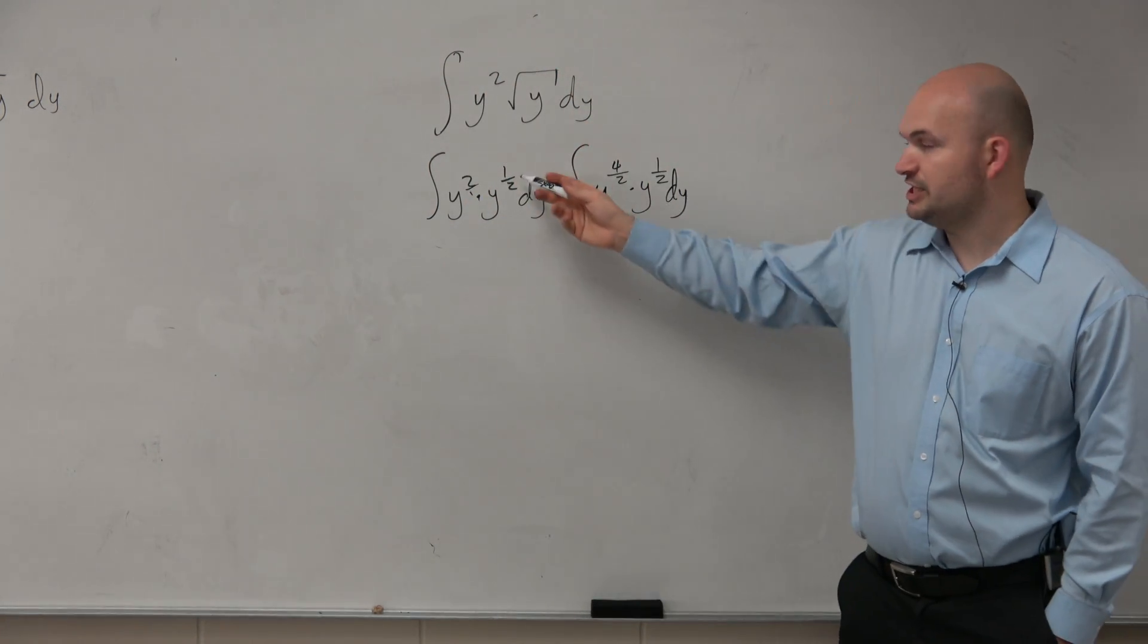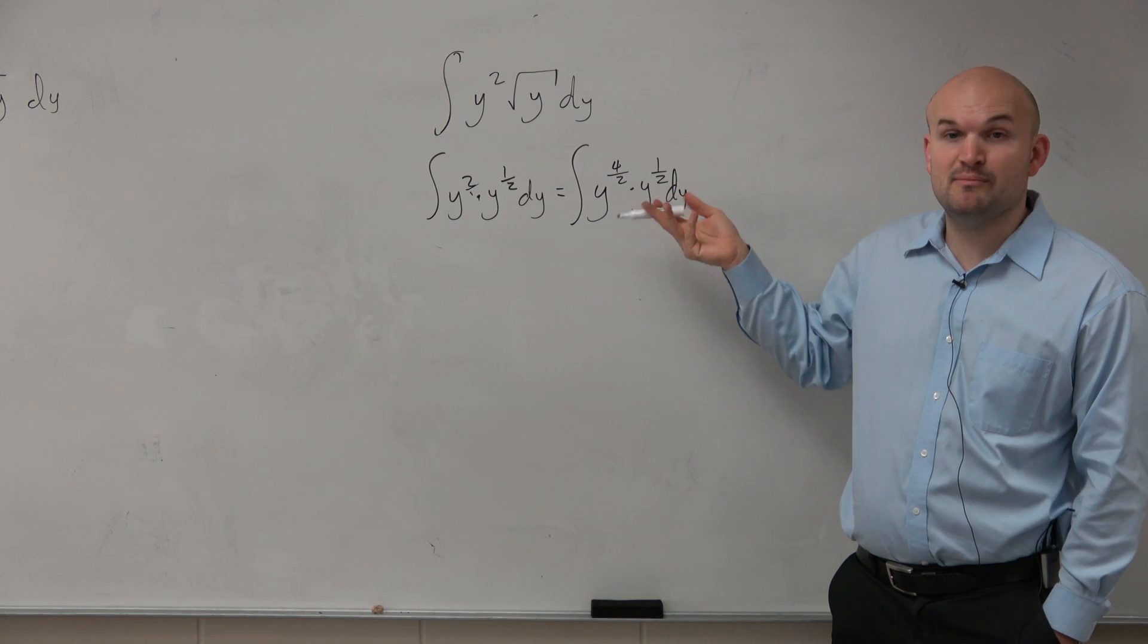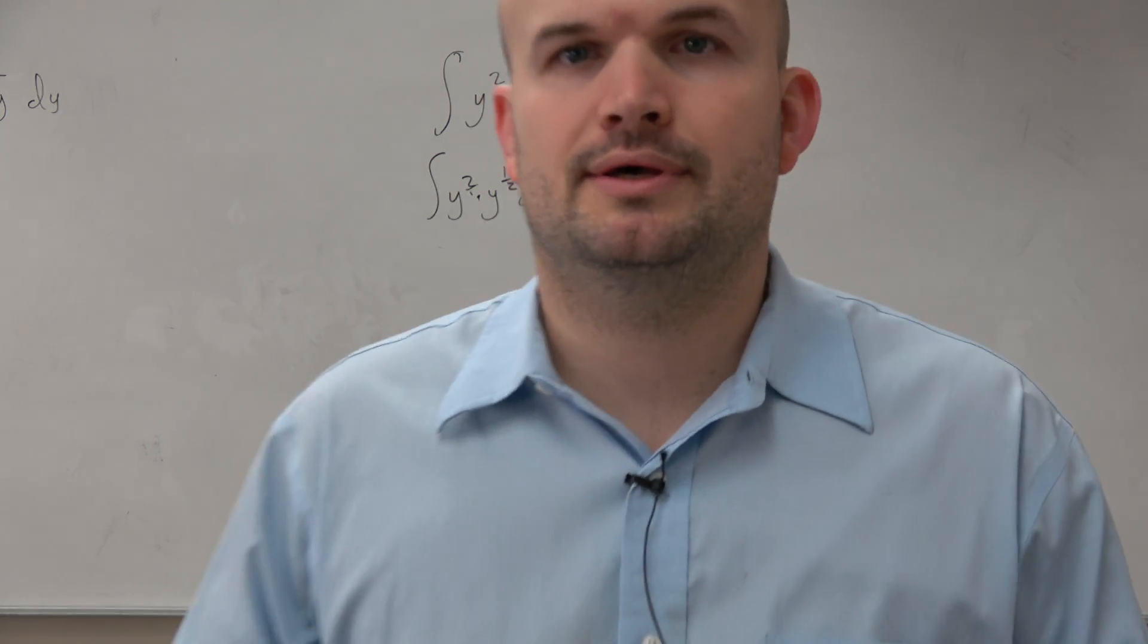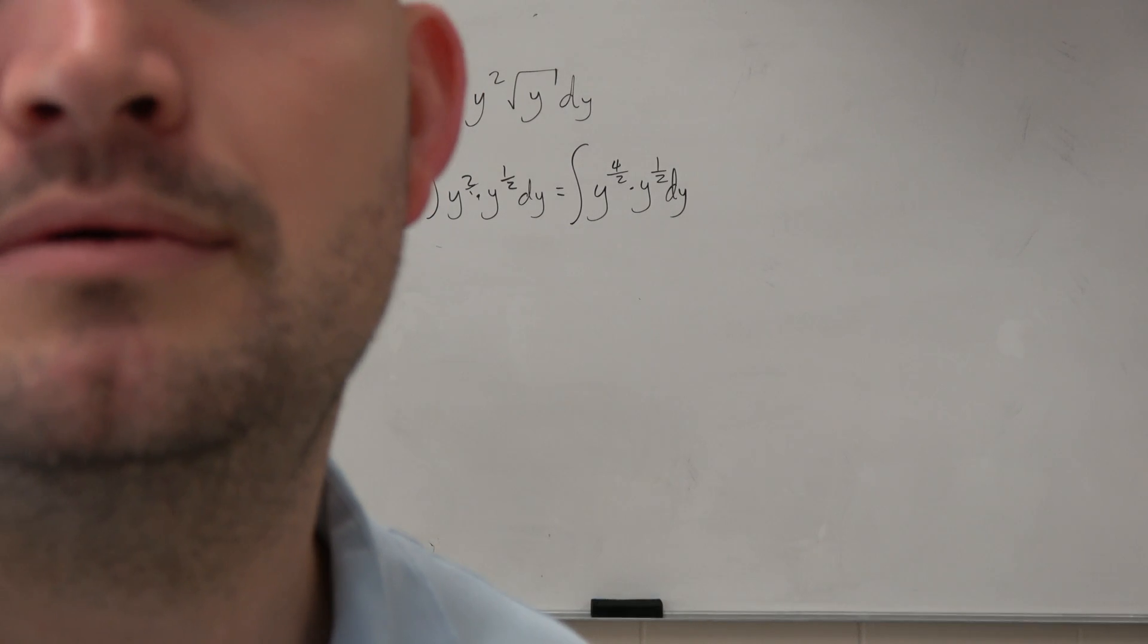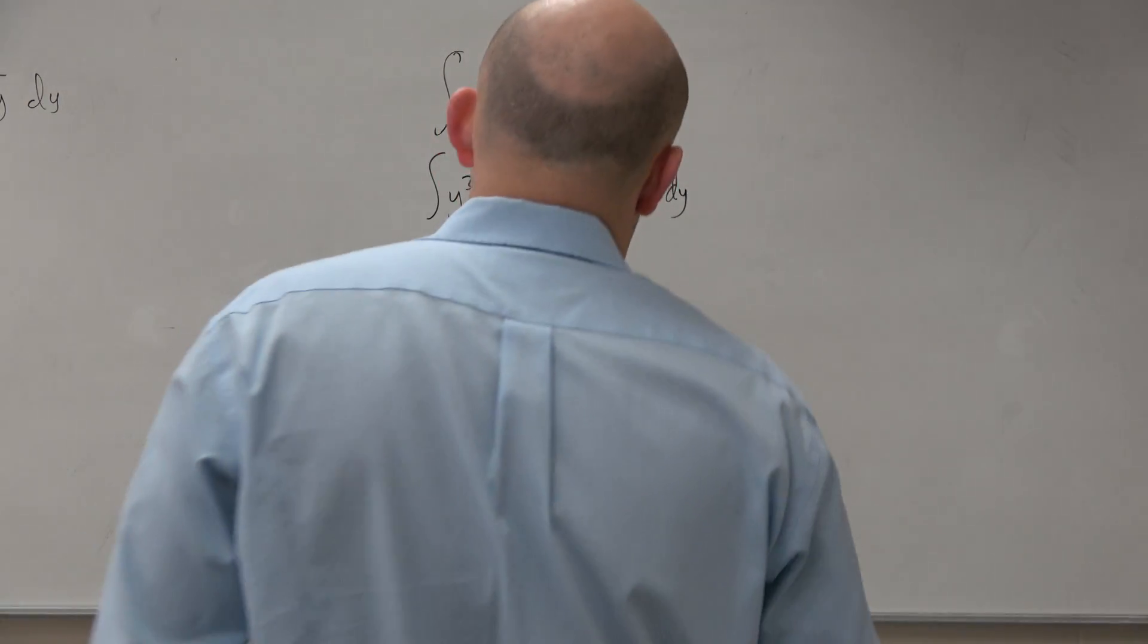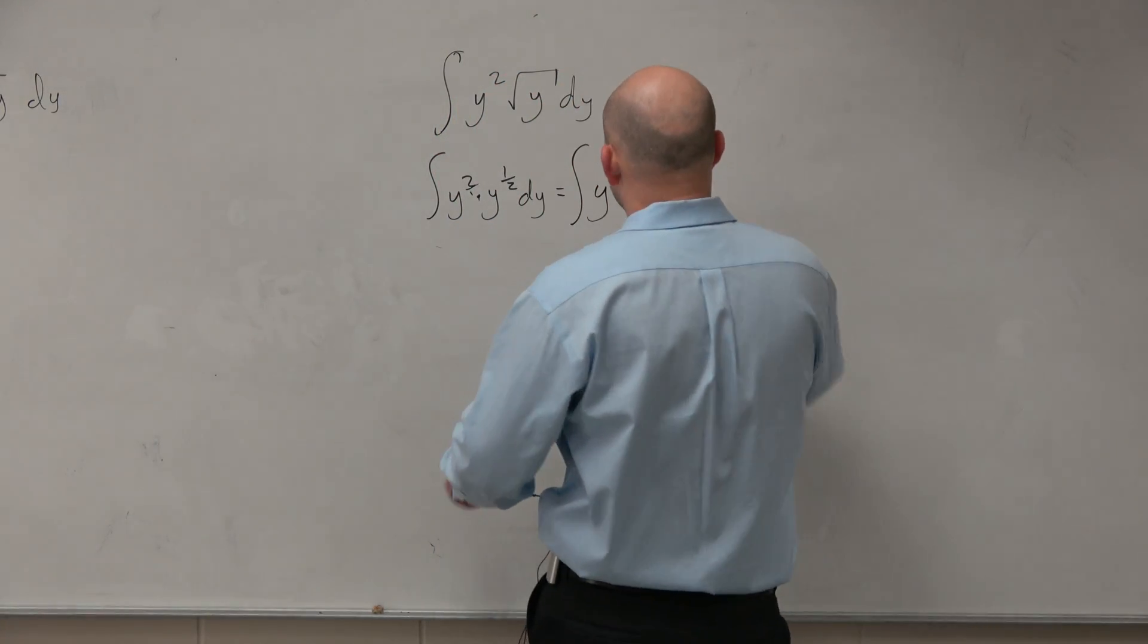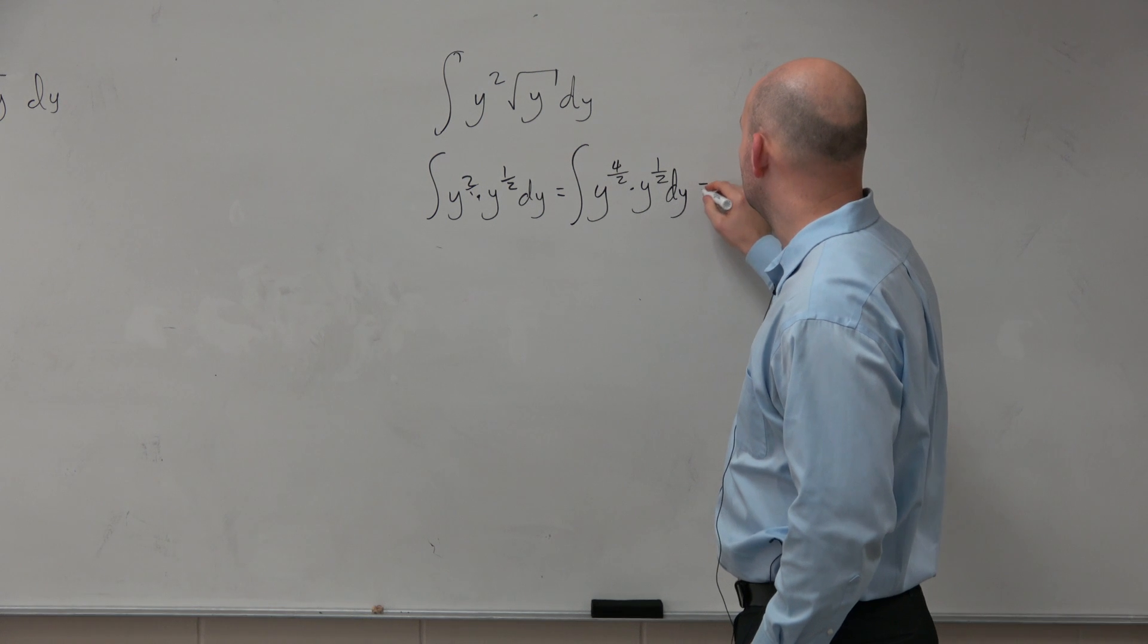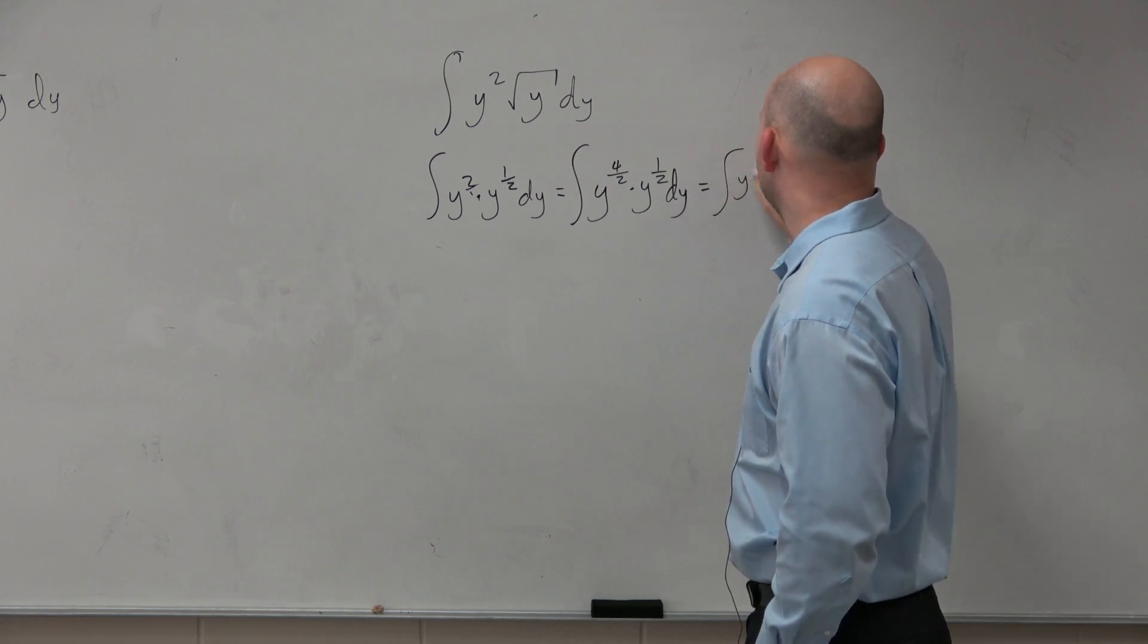So you see how I just changed 2 to 4 over 2? And then, obviously, remember when we're multiplying exponents, we add the powers. So that equals y to the 5 halves dy.